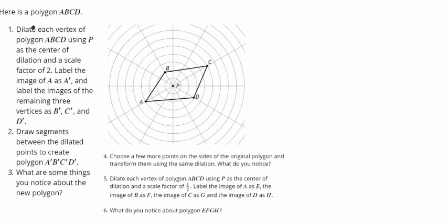Question number two says here is a polygon A, B, C, D. Dilate each vertex of polygon ABCD using P as the center of dilation and a scale factor of two. We're going to go two units from P, and two times two would be four. So we're going to go four units — that will be B prime.